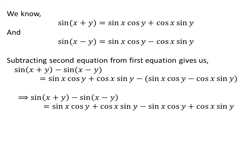Here, I have removed the brackets. Further simplification gives us sin(x + y) minus sin(x - y) equals 2 cos x sin y. Thus, we have proved the trigonometry identity.